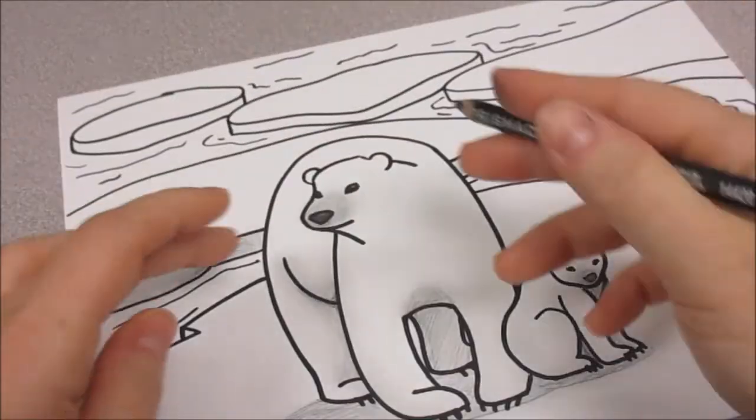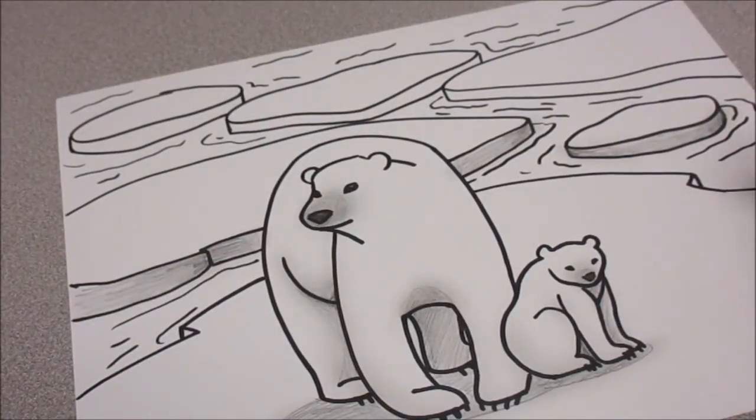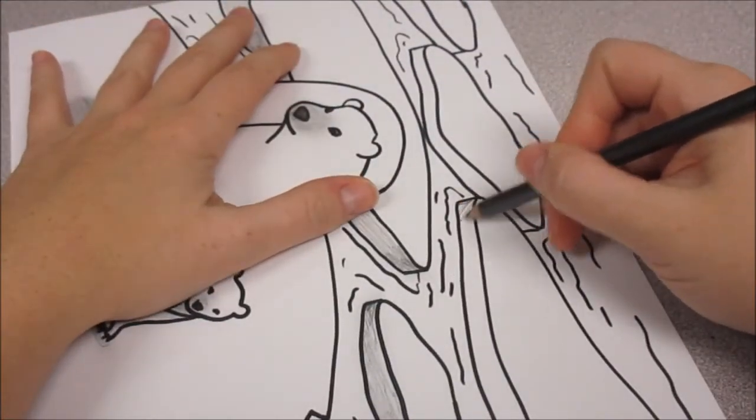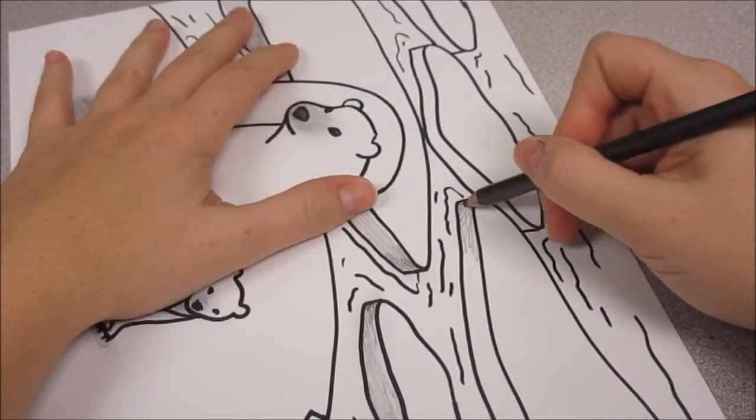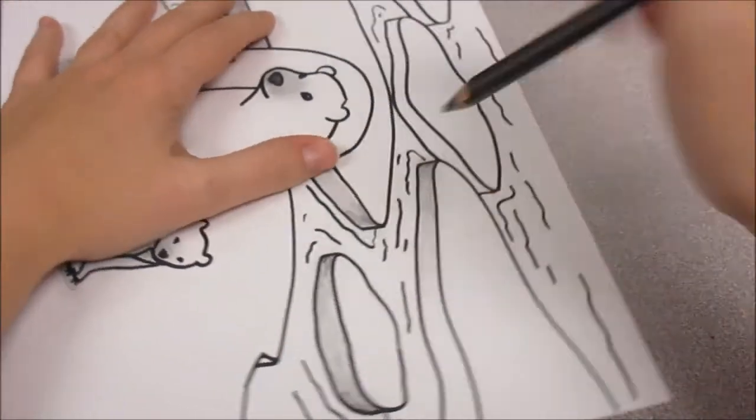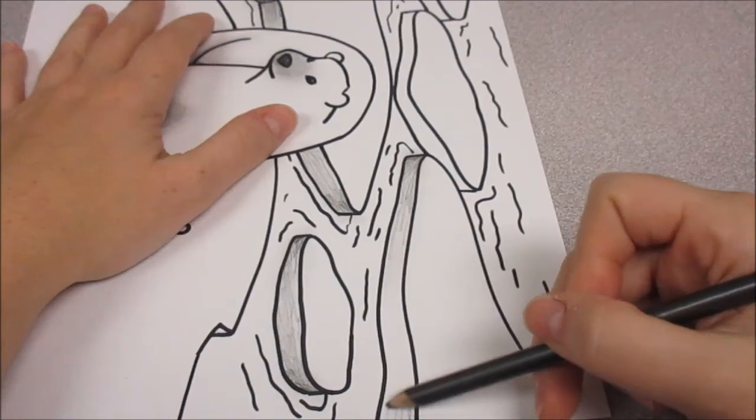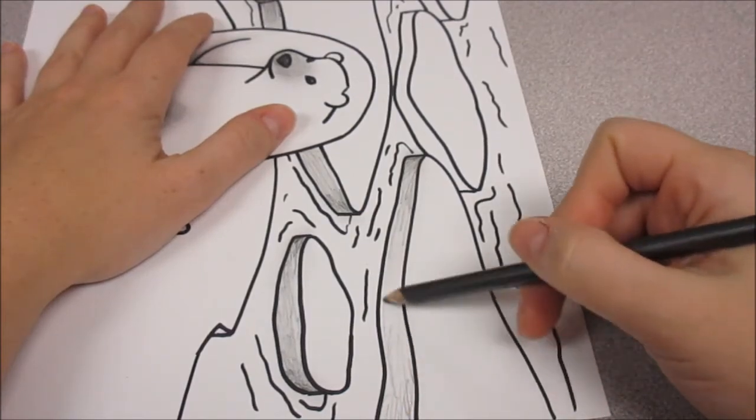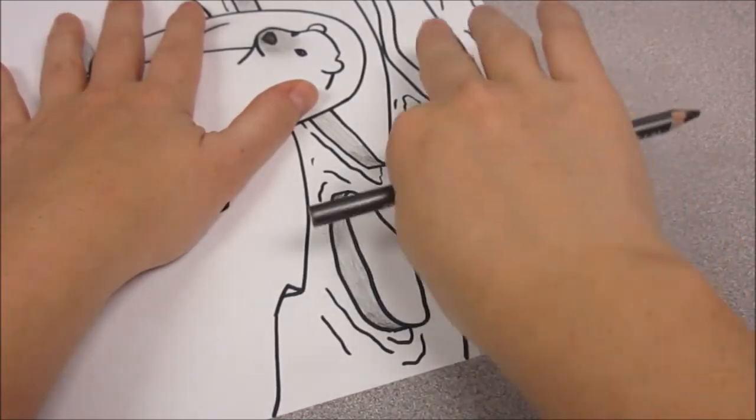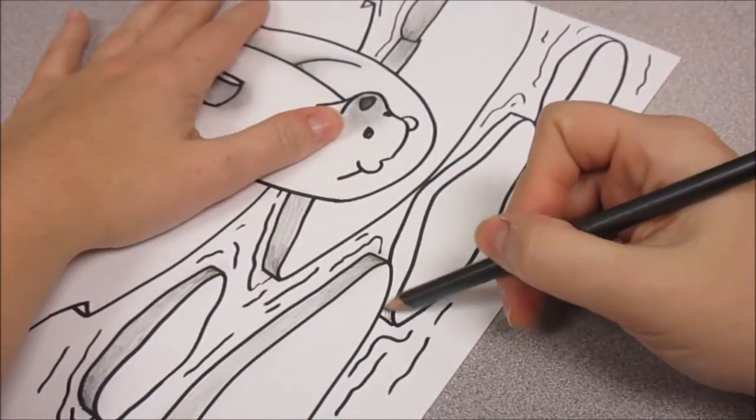Now you could color this water blue if you want, or you could color it just in with this pencil if you don't have colors, because the water is really going to depend on what's reflecting. And if it's not a blue sky, maybe it's dark like nighttime and it could be black, or maybe it's gray and cloudy.